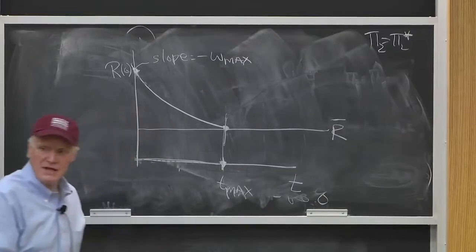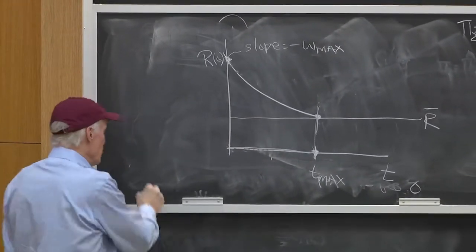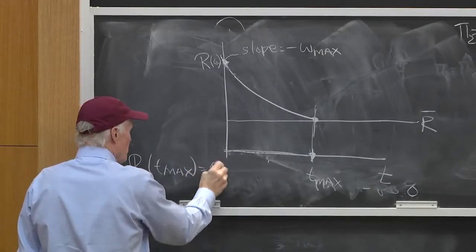At the maximum T point, I know R bar has to be the wage. So R of T max equals R bar.